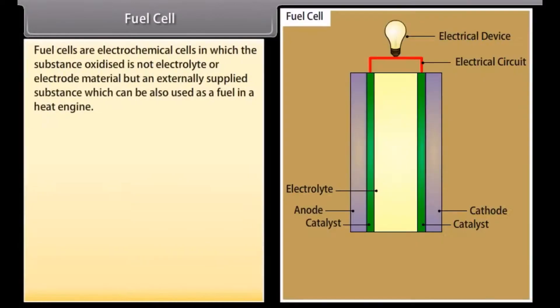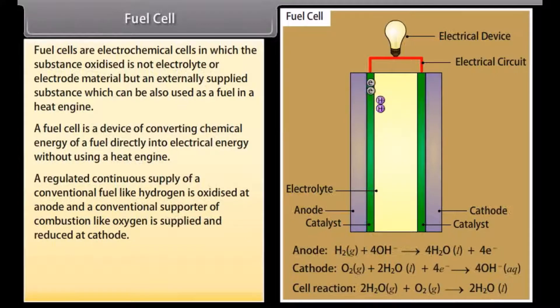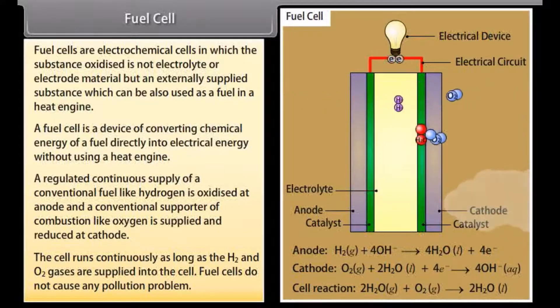Fuel cell. Fuel cells are electrochemical cells in which the substance oxidized is not electrolyte or electrode material but an externally supplied substance which can also be used as a fuel in a heat engine. A fuel cell is a device of converting chemical energy of a fuel directly into electrical energy without using a heat engine. A regulated continuous supply of a conventional fuel like hydrogen is oxidized at anode and a conventional supporter of combustion like oxygen is supplied and reduced at cathode. The cell runs continuously as long as the hydrogen and oxygen gases are supplied into the cell. Fuel cells do not cause any pollution problem.